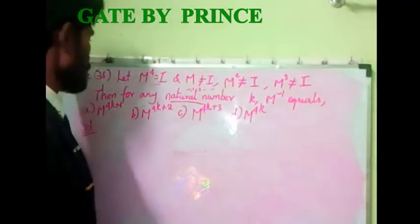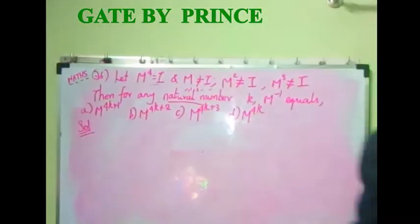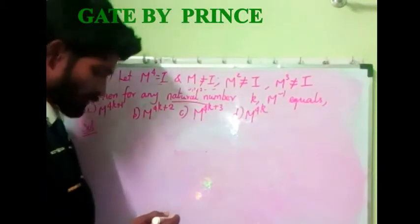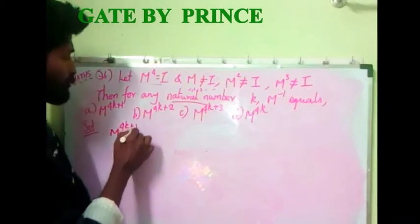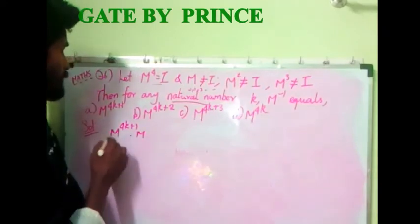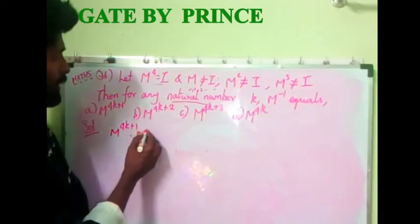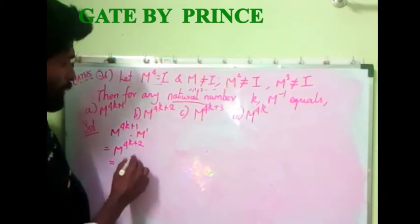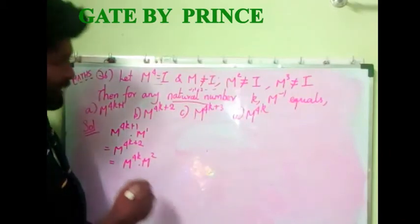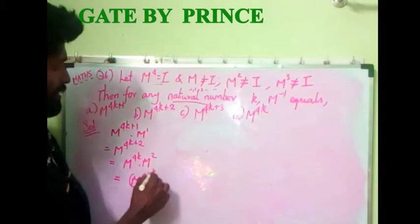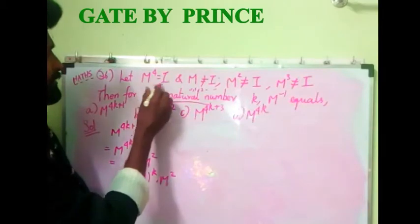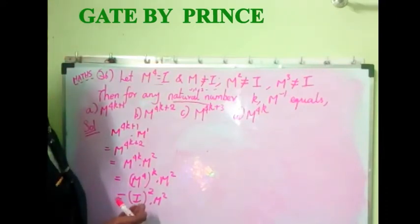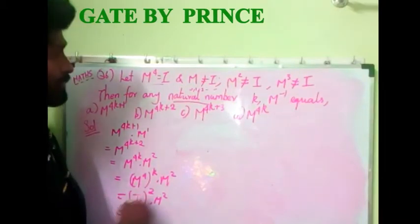Check option A: m power 4k plus 1. I multiply by m — bases are the same so I add the powers — giving m power 4k plus 2. I rewrite this as m power 4k into m squared, which equals (m power 4) to the power k into m squared. Since m power 4 equals I, that becomes I to the power k into m squared, which simplifies to m squared.